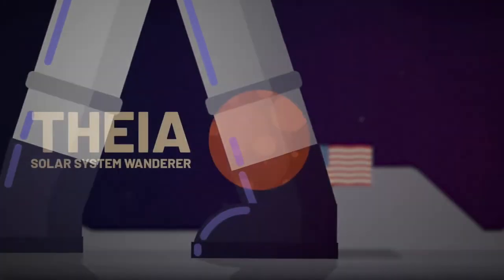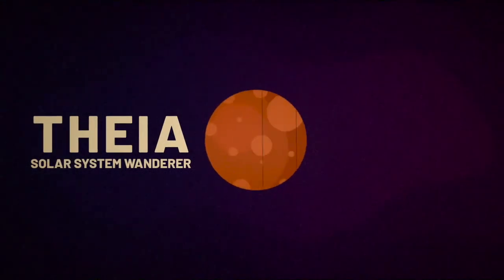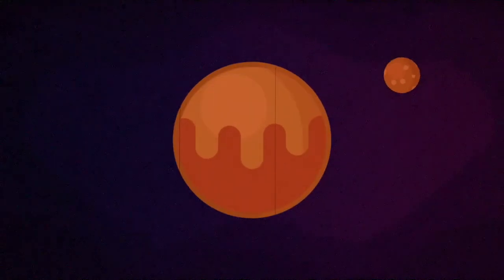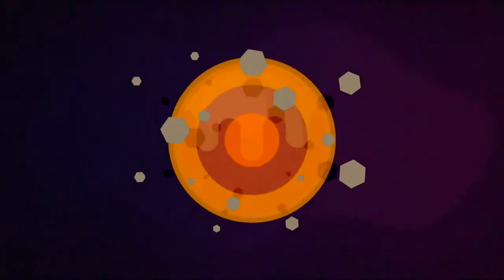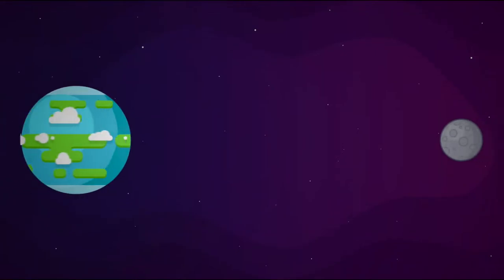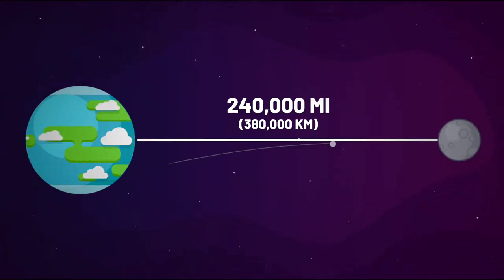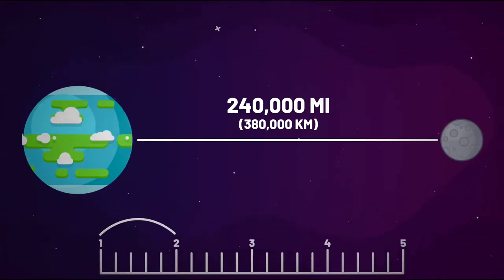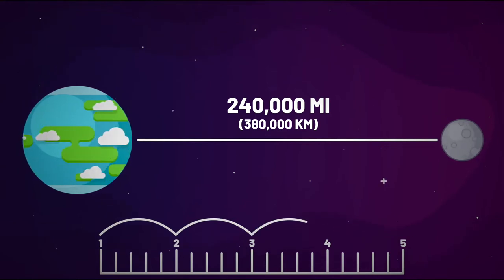Our Moon is the result of a collision between Earth and a planet named Thea, over 4 billion years ago. The Moon orbits about 240,000 miles from Earth, though it actually drifts about 3.8 centimeters farther away every year.